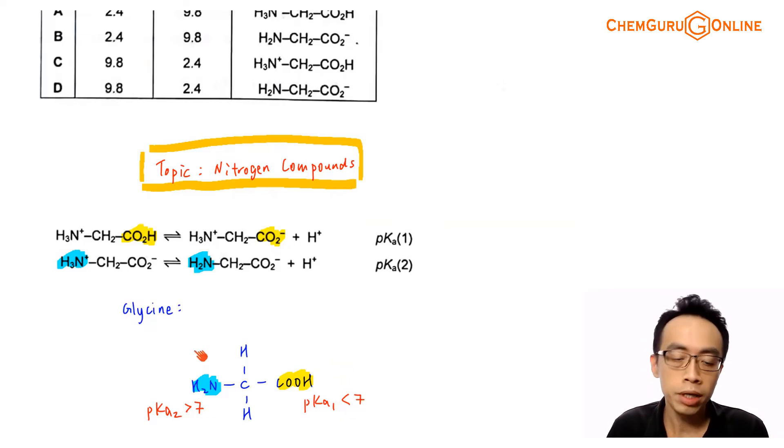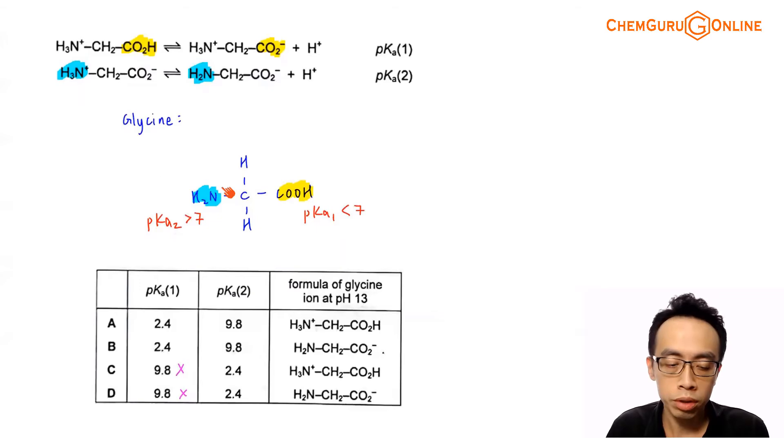If it is an amine, amine is a base. So we would expect the pKa value for a base to be greater than 7. pKa2 should be greater than 7. Once we have determined this, we can look at the options and eliminate some possibilities. pKa1 should be the value 2.4, pKa2 should be 9.8. Because of that, we will eliminate options C and D.